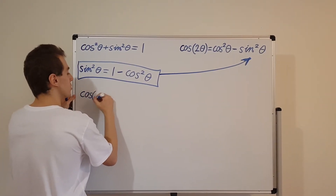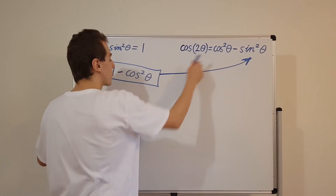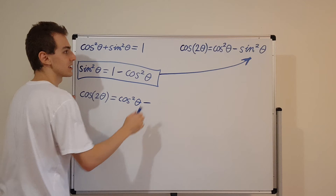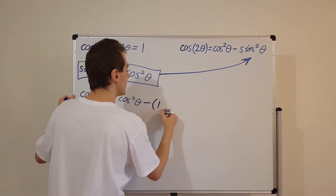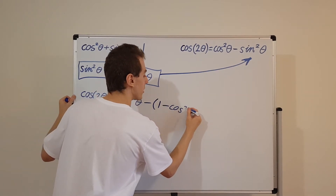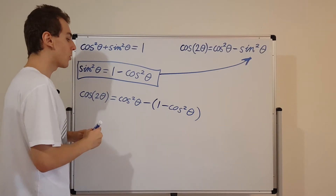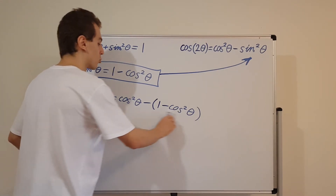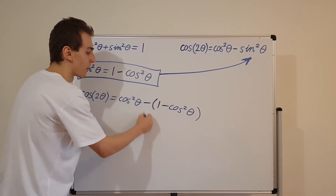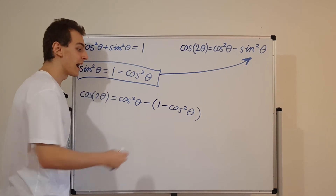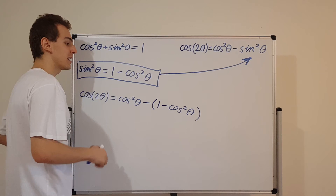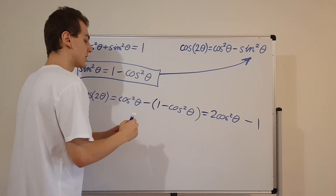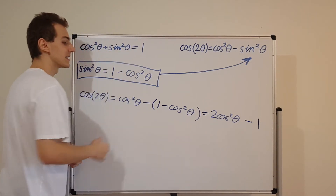Substituting in, cosine of 2θ equals cosine squared of θ minus sine squared of θ. But sine squared of θ is the same as (1 minus cosine squared of θ), so we get: cosine of 2θ equals cosine squared of θ minus (1 minus cosine squared of θ). Now we have no sine squareds. The minus applied to 1 gives minus 1, and the minus times minus gives a plus, so we get two copies of cosine squared: cosine of 2θ equals 2 cosine squared of θ minus 1.